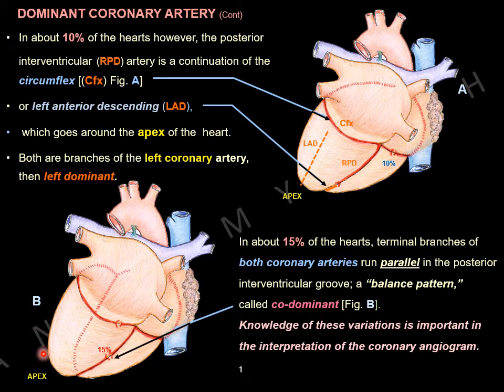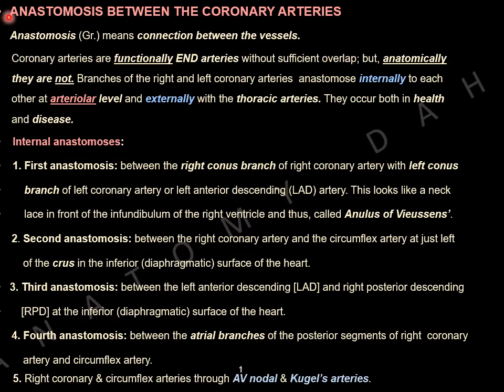Knowledge of these variations is important in the interpretation of the coronary angiogram. Anastomosis — in Greek — means connection between vessels. Coronary arteries are functionally end arteries without sufficient overlap, but anatomically they are not. Branches of the right and left coronary arteries anastomose internally with each other at the arteriolar level, and externally with the thoracic arteries. They occur both in health and disease.